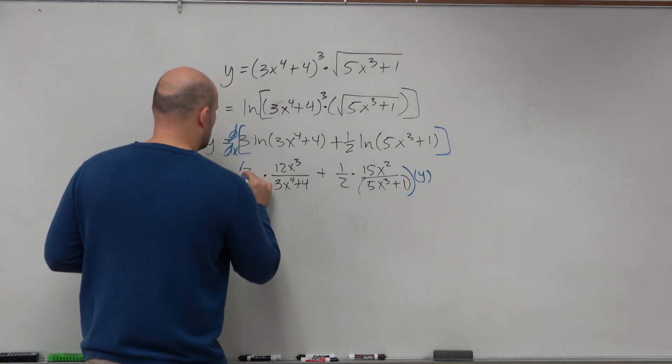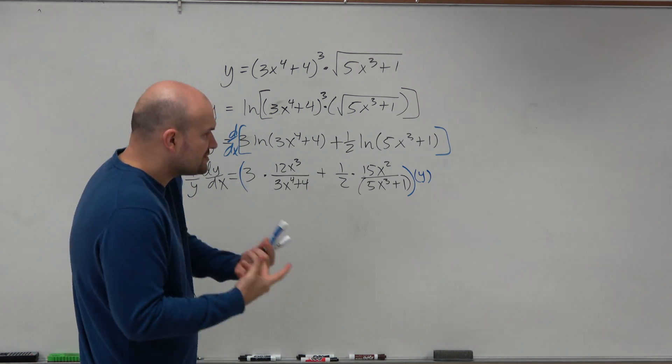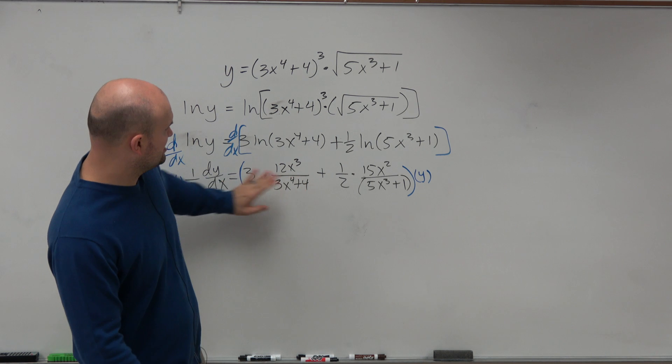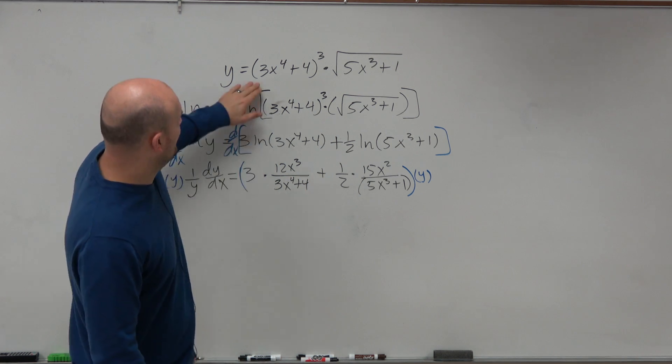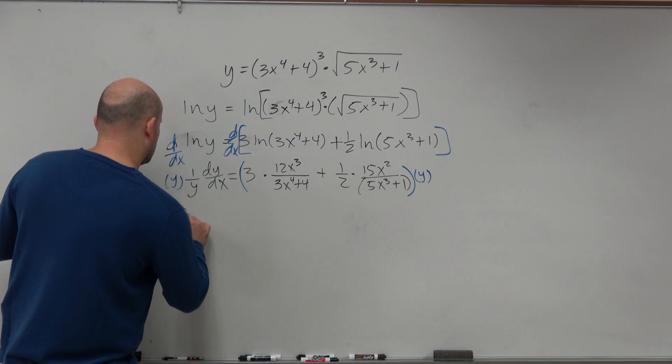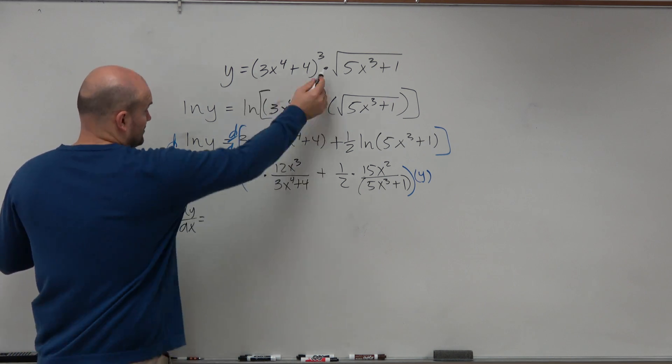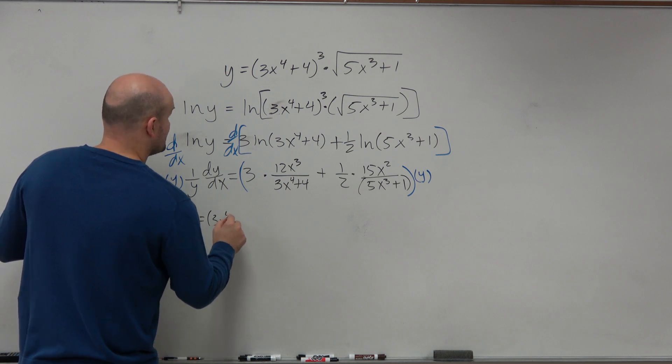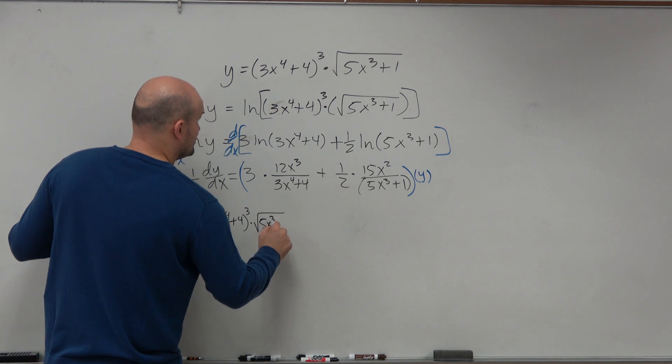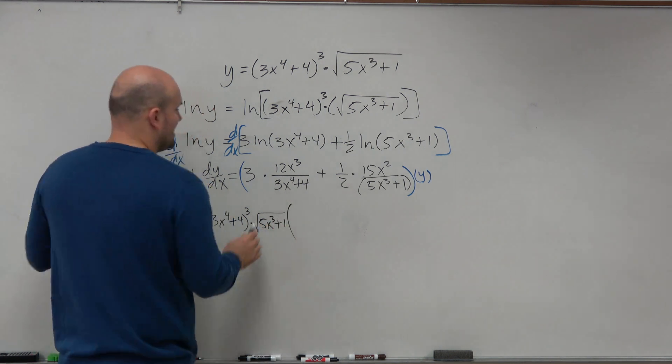Just make sure to remember that y is multiplied by everything. Typically, it's best to just write the y in front. But for space purposes, I'm showing it like this. And we know y is equal to this. So that's how I'm going to write my final answer. So I'll write dy dx is equal to y, which is really 3x to the fourth plus 4 cubed times the square root of 5x cubed plus 1 times...